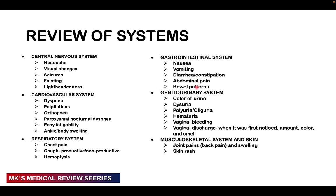For the genitourinary system, ask about the color of urine, pain on urination (dysuria), polyuria or oliguria, blood in the urine (hematuria), and any vaginal bleeding or discharge. If there is a discharge, ask when it was first noticed, the amount, the color, and the smell. Also ask about the musculoskeletal system and skin: any joint pains, back pain and swelling, and any skin rash.